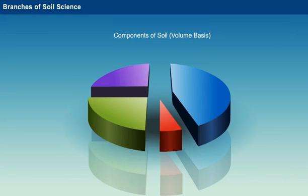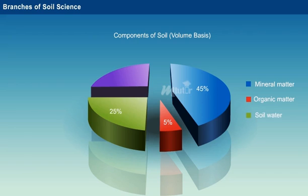Let us look at the percentage of soil components. Mineral matter accounts to 45% and organic matter amounts to 5%, while soil water and soil air contribute 25% each.